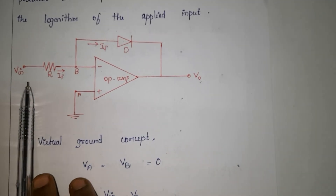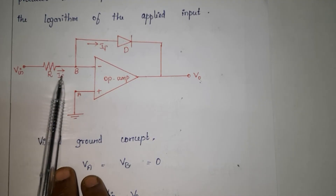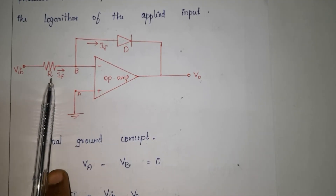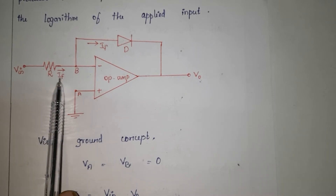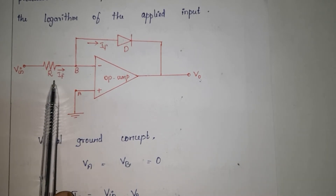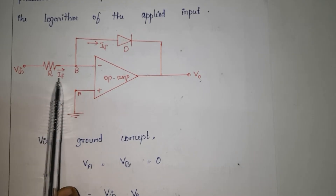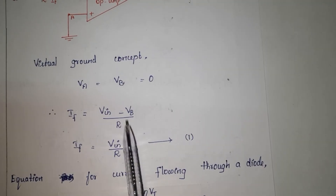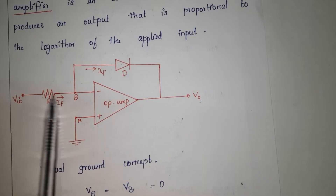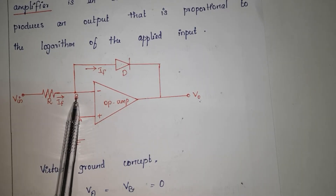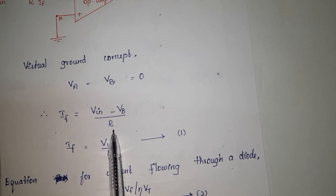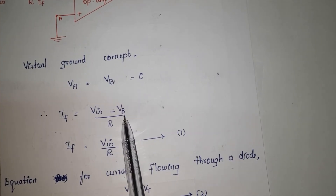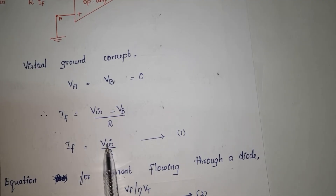Now we are going to find the current flowing through resistance R at the inverting terminal using Ohm's law: I = V/R. The current IF is equal to (Vin minus VB) divided by R. Since VB = 0, substituting gives IF = Vin / R. This is equation number 1.